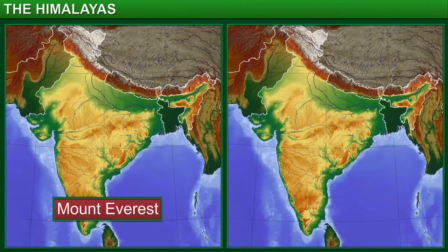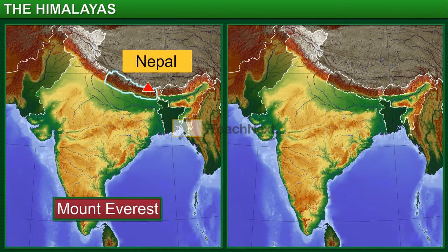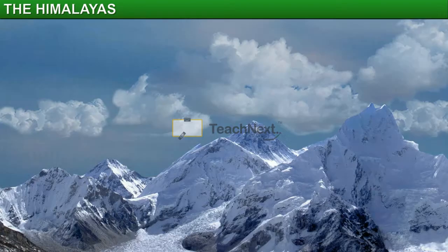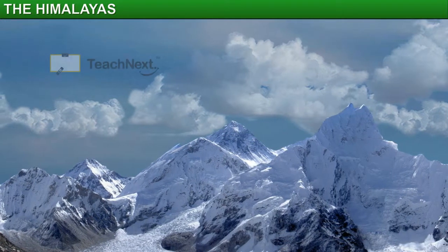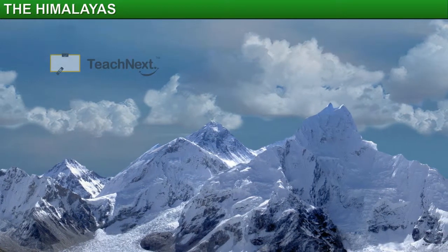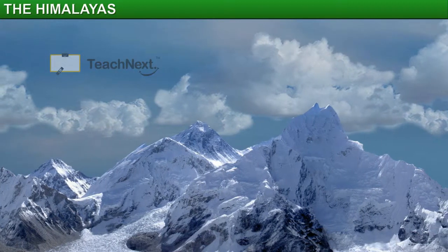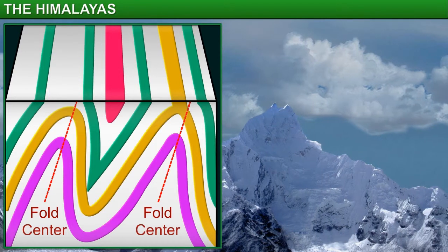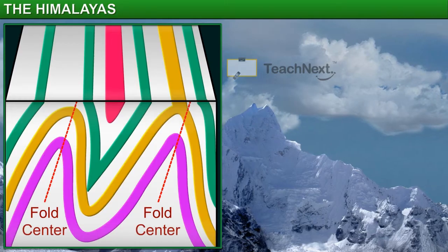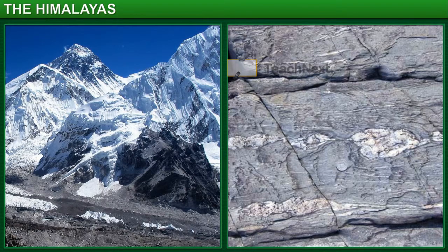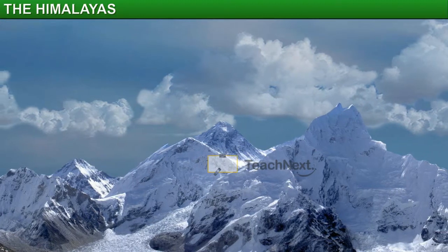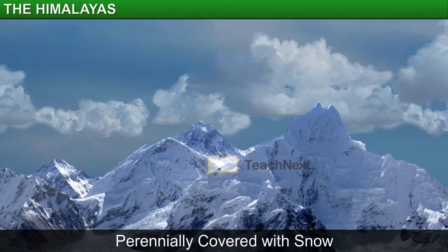Mount Everest is located in Nepal, while Mount Godwin-Austin is in Ladakh, India. The Himalayas are fold mountains; however, the Great Himalayan folds are not completely symmetrical. This is why the peaks dip slightly away from the center. The core of the Himalayan range is composed of granite. The lofty heights of the mountains of the Great Himalayan range mean that the peaks are snow-clad all the year round.